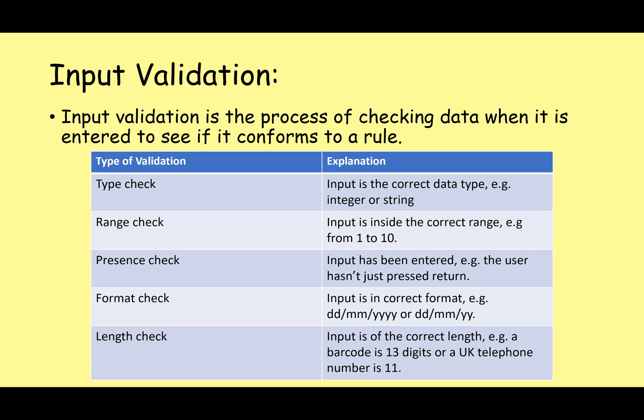There are several different types of validation you need to know about. A type check asks: is the input the correct data type, for example integer or string? A range check asks: is the input inside the correct range, e.g. a number from 1 to 10? A presence check simply asks: has input been entered at all? Maybe the user has put their name or email address in, or maybe they just pressed enter — you need to check that something has actually been entered. A format check asks: is the input in the correct format?